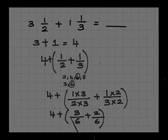So now we have the like units, 6. So 6 is the denominator. And let's add the numerator 3 and 2, which gives 5. So the answer is 4 5/6.